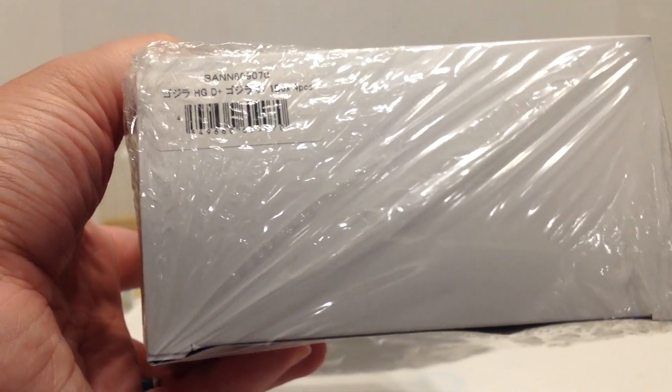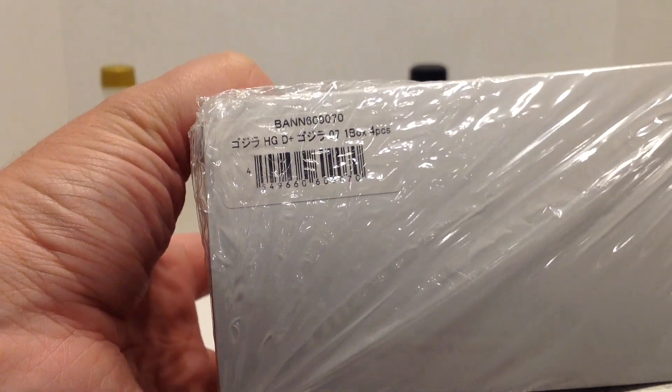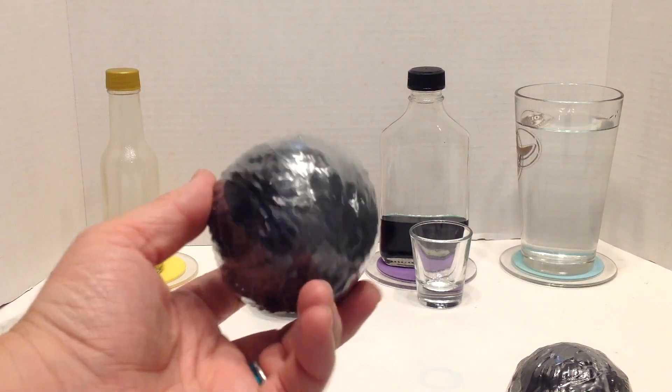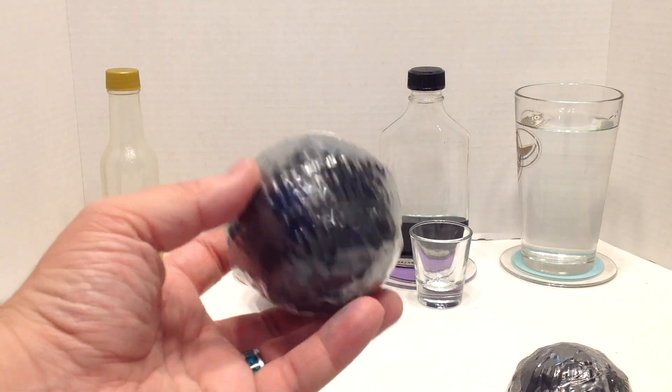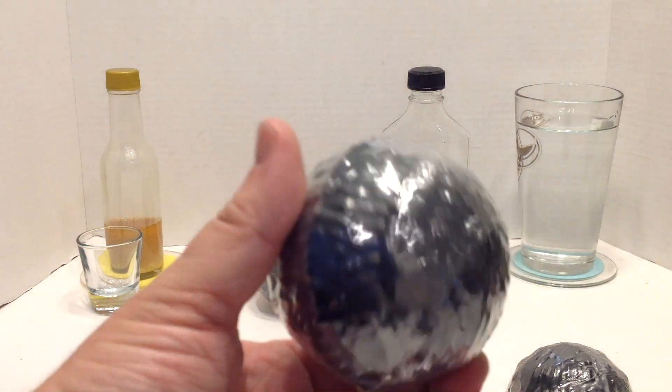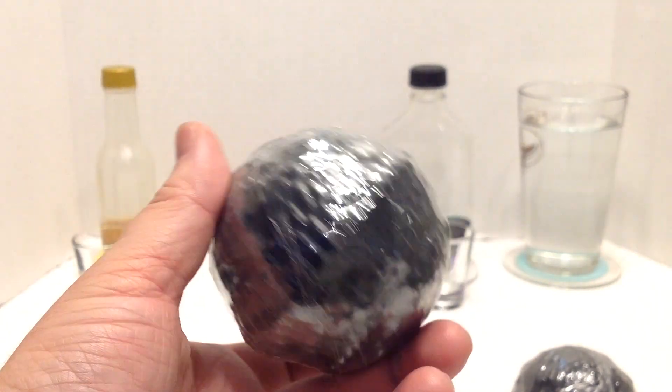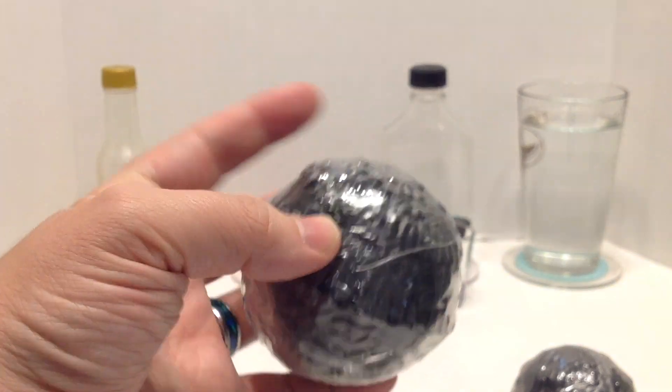So if you haven't seen any of the previous videos, and you don't know anything about the HGD Plus Series, these are sold in capsule machines in Japan. There are four figures per series, but they are randomly assorted. You cannot tell from the capsule which figure is inside. You can buy them in cases of four, but you're not guaranteed to get an entirely complete set, which is why I always buy at least two cases. I've been buying three as of late, except for this one, which is two, so hopefully I get a full set.